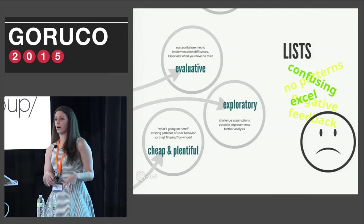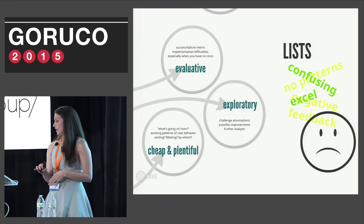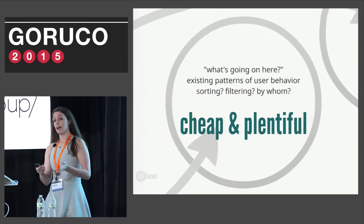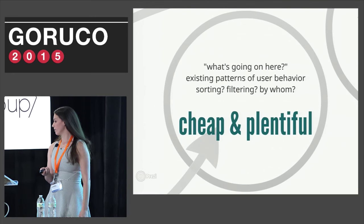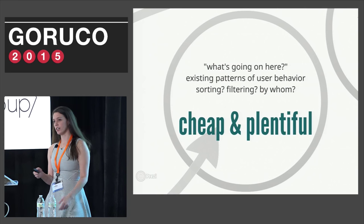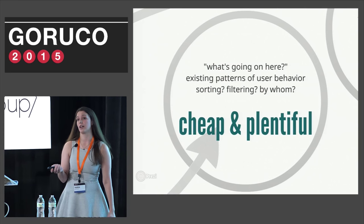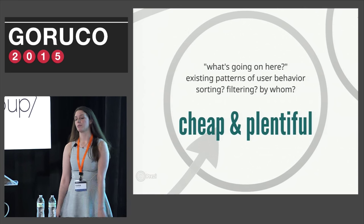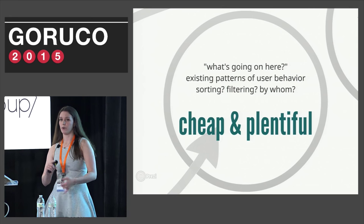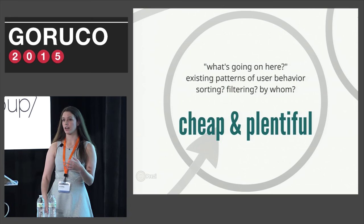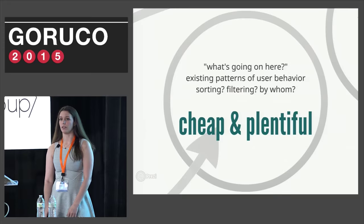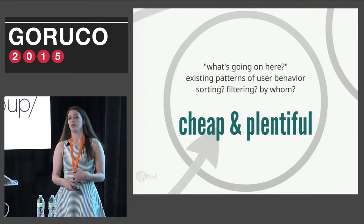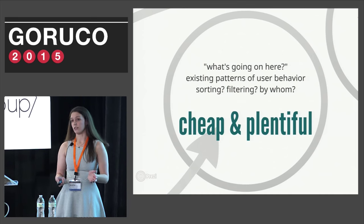We set out to overhaul our lists, and while we were doing so, to put in some kind of data collection around how successful the new list feature did. The first kind of data we got was the bottom of the hierarchy — cheap and plentiful data. Everything that people could possibly do with these lists, we would log: when they filtered, when they sorted, when they took actions, who they were, how long they'd been on the platform — all kinds of data, very carefully gathered and organized, but not really set out to answer a specific question. This is good for going in and looking at the patterns of user behavior.